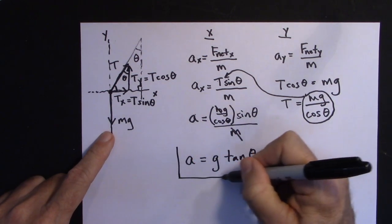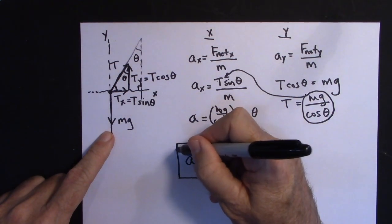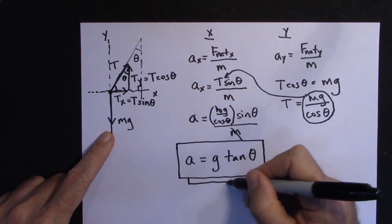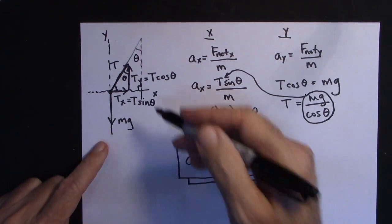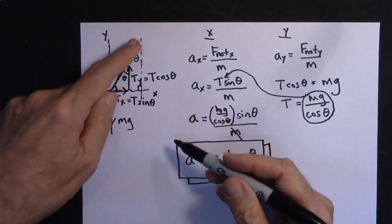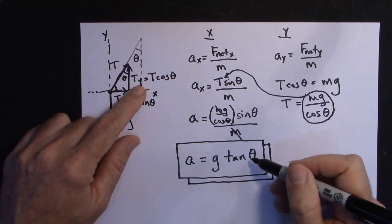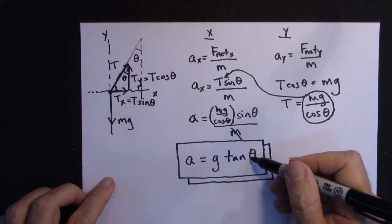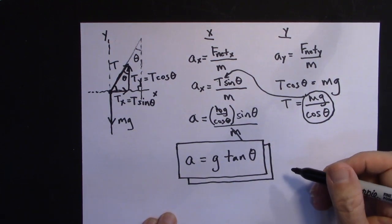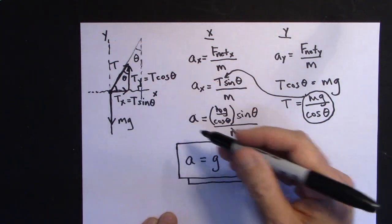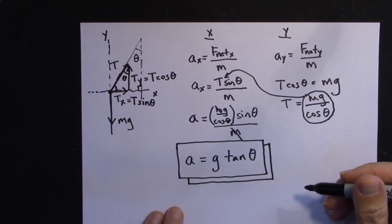Interestingly, it doesn't depend on the mass of the bowling ball. When theta is zero — meaning the ball is hanging straight down — the tangent of zero is zero, so the acceleration is zero. That makes sense: if you see something hanging straight down, there's no acceleration of the vehicle.